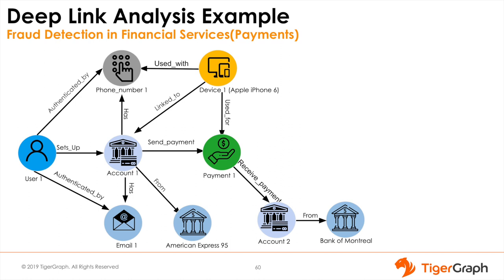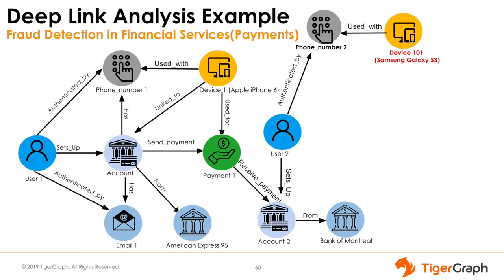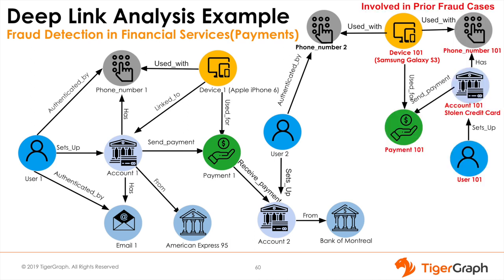Deep link analysis, however, reveals a different picture. The recipient account 2 belongs to user 2, who authenticated with phone number 2. That phone number is used with device 101, a Samsung Galaxy S3. As the analysis digs through the history of prior fraudulent transactions and looks for devices associated with those transactions, it finds that device 101 was used last year with phone number 101 to set up account 101, which initiated payment 101 — later found to be fraudulent, as account 101 was linked to a stolen credit card. Deep link analysis looks beyond just the current accounts; it looks at linked devices and historical patterns, tracking all the way through to prior fraudulent transactions involving the common device, device 101. This is a six-hop query, and a native parallel graph such as TigerGraph can connect this in real time for hundreds of thousands of payment transactions per second.